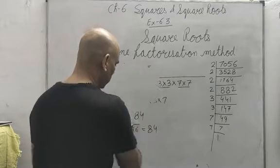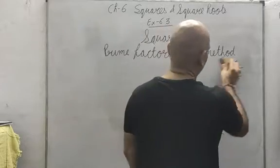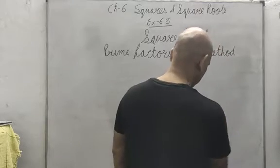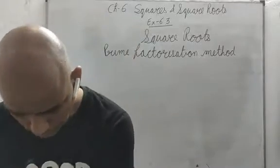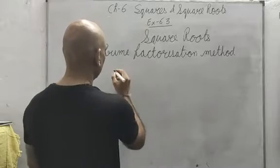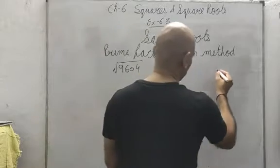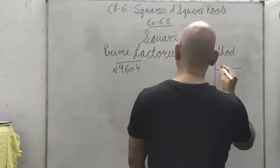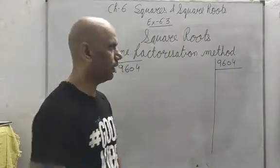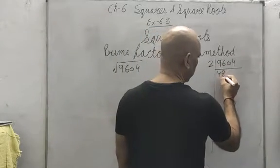Let me solve one more question, and thereafter we will switch to the exercise. This time the question is 9604. If I want to find out the square root of 9604, I will have to find the prime factors. Since it is an even number, it will be divided by 2.